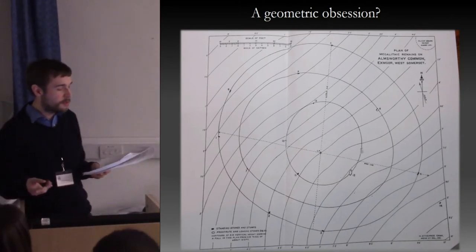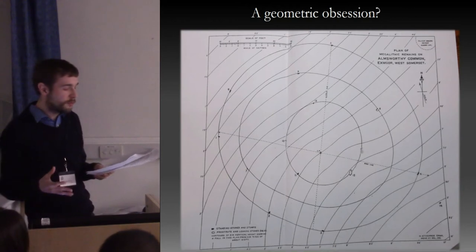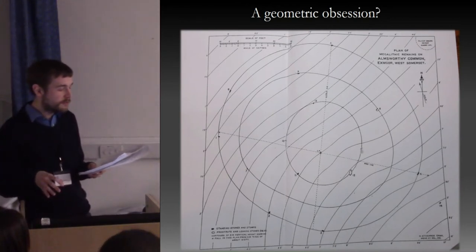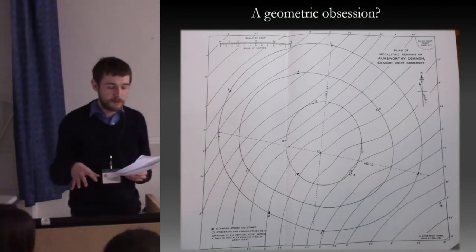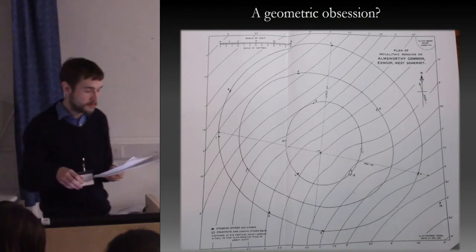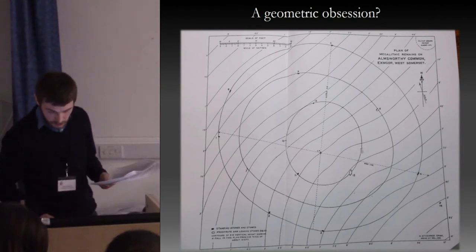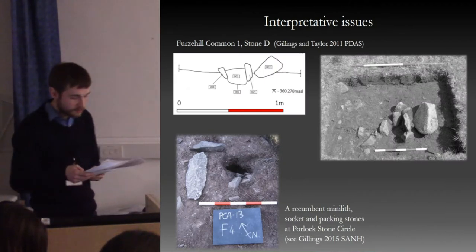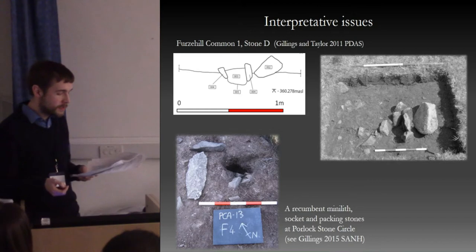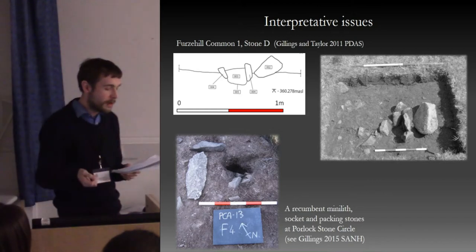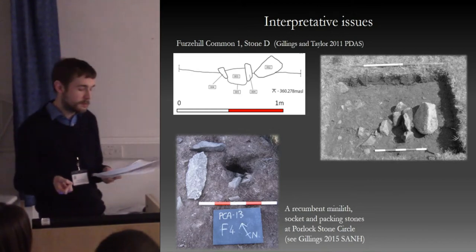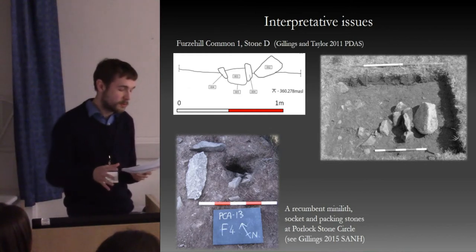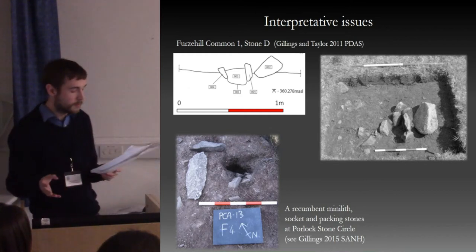Whilst a few of the sites do form geometric patterns in a broad sense, the great majority don't really fit well into the idea of rigid geometric forms. I argue instead that the variation which is evident ought to be seen as a defining characteristic of the tradition of raising small standing stones on Exmoor, rather than a source of confusion as to which category we should place the sites in.